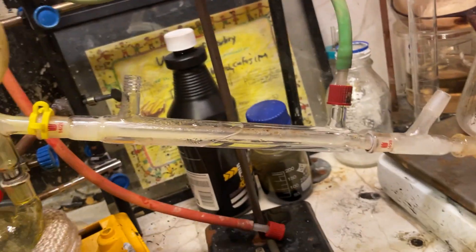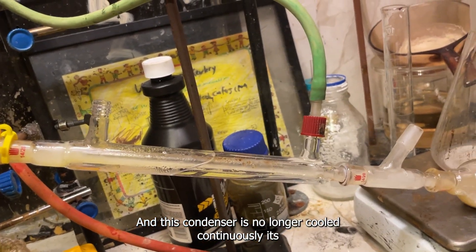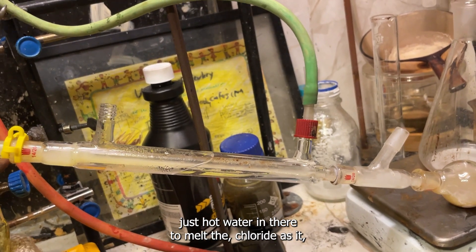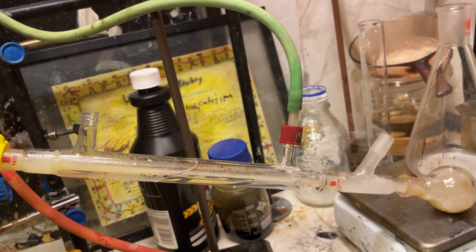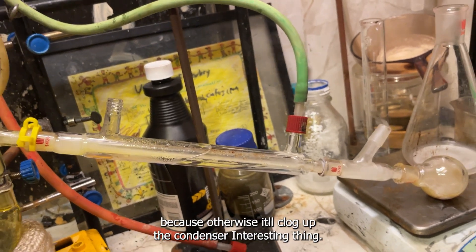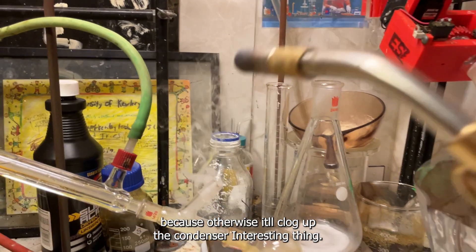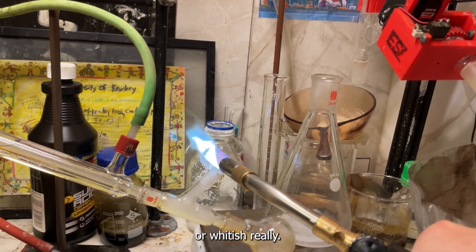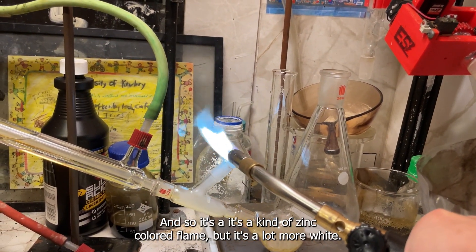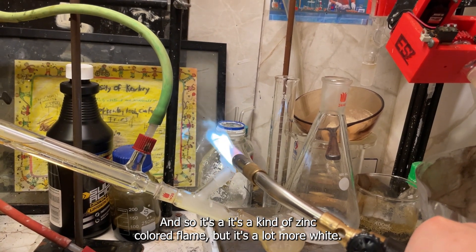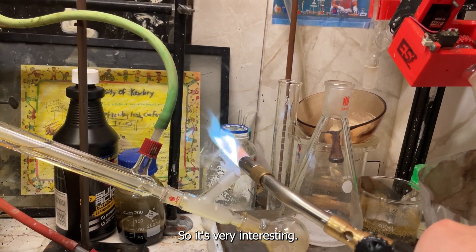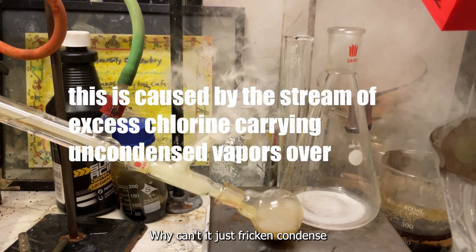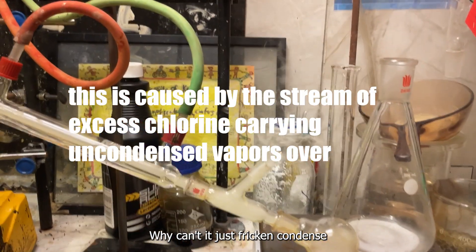And this condenser is no longer cooled continuously. It's just hot water in there to melt the chloride as it condenses, because otherwise it will clog up the condenser. Interesting thing. Antimony has bluish green smoke. Or whitish really. It's a kind of zinc colored flame, but it's a lot more white. So it's kind of interesting. Why can't it just freaking condense?